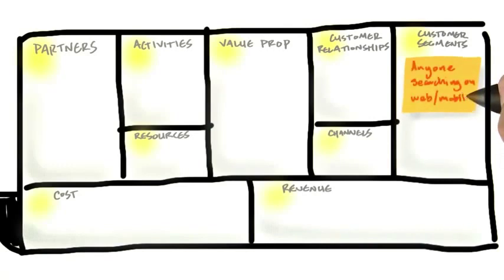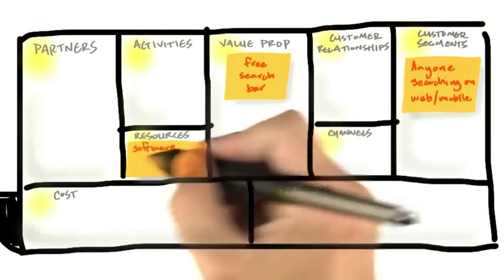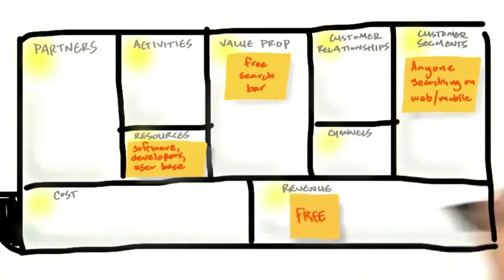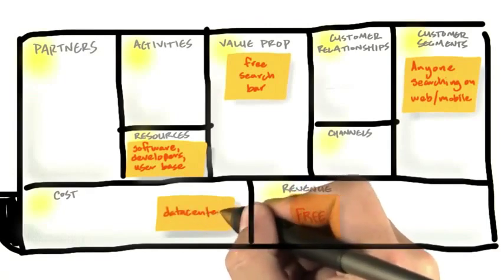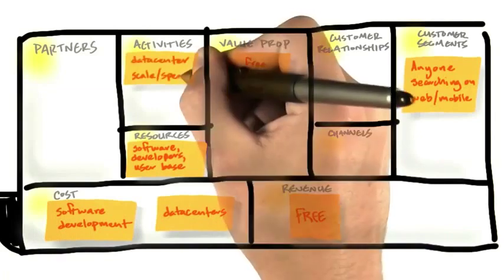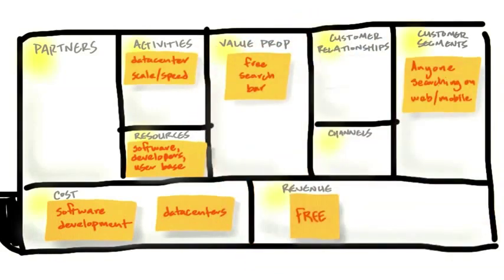It's anyone searching on the web or mobile. And the product we have is a free search bar or free mobile app. What are the key resources? Well, they need software, software developers, and an installed user base. But the key idea is this product is free. If you think about the cost structure, it requires massive data centers, software development, and key activities around data center scale and speed. The key idea is the revenue model is free.